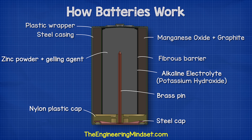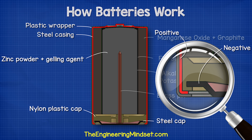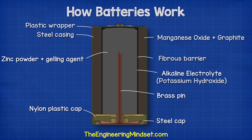This gives us the negative terminal. Notice that the positive and the negative terminals are separated by the plastic cap, ensuring they are electrically isolated from each other. Otherwise electrons could flow through the casing to reach the positive terminal and short circuit the battery.